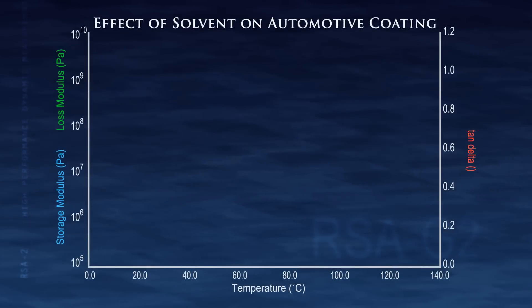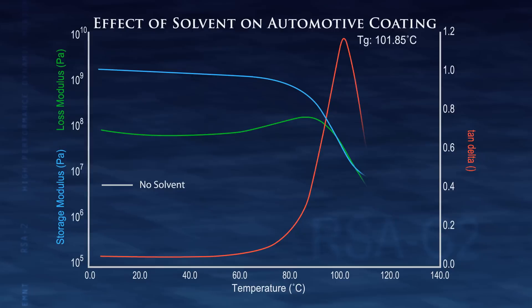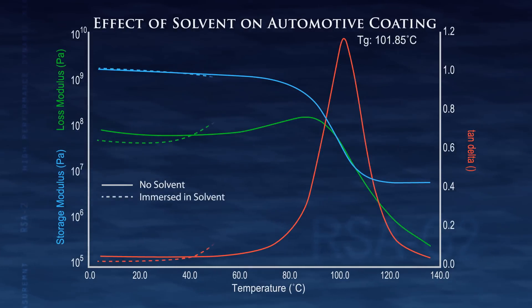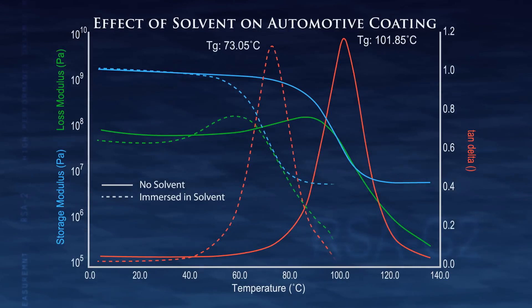This figure shows the dramatic effect water can have on mechanical properties of a polymer film used in an automotive application. The water acts as a plasticizer, dramatically shifting the glass transition temperature down by nearly 30 degrees Celsius compared to that in air.